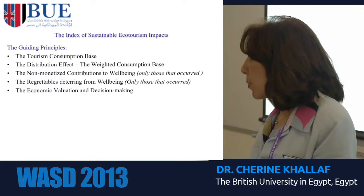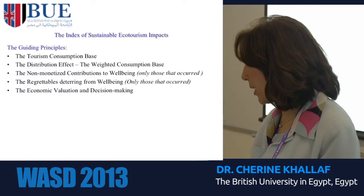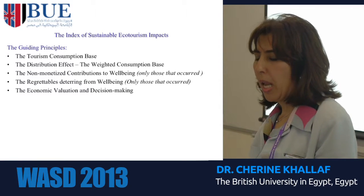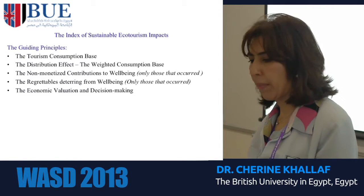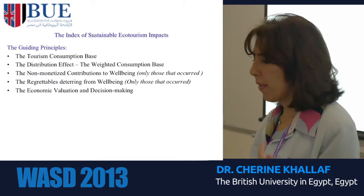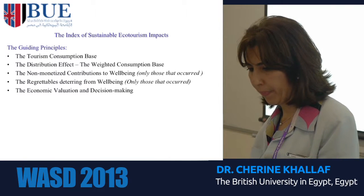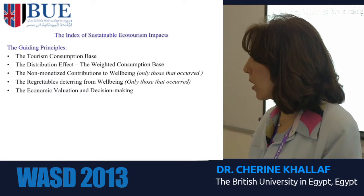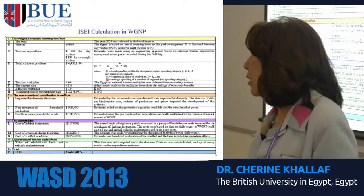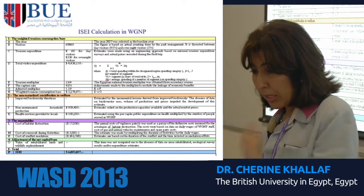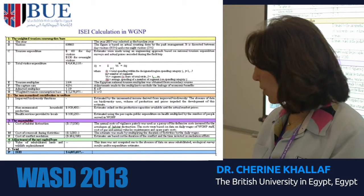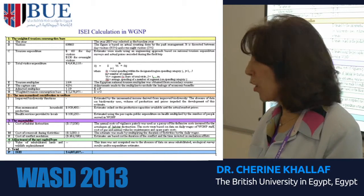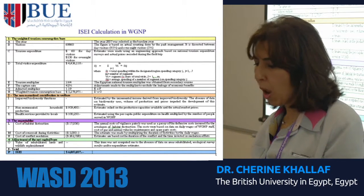The guiding principles of the index are: the calculation of the tourism consumption base for the region; accounting for distribution effects; accounting for the non-monetized contribution to well-being; deducting the regrettables that occur from the introduction of ecotourism; and conducting economic valuation for identified variables and integrating them in the decision-making process. An example of the calculation done for 2007 shows around 70,000 visitors, with a total economic impact on the region of around $6 million.